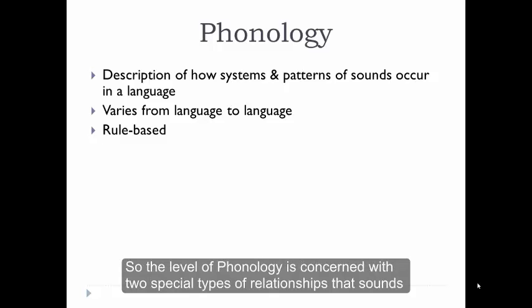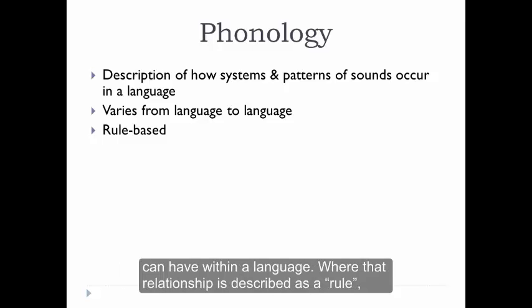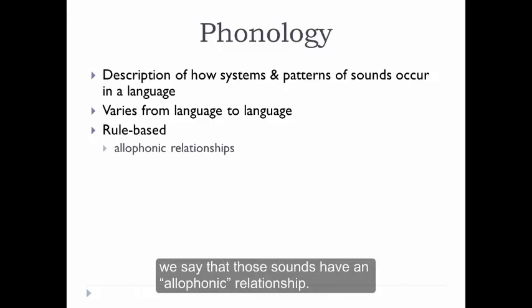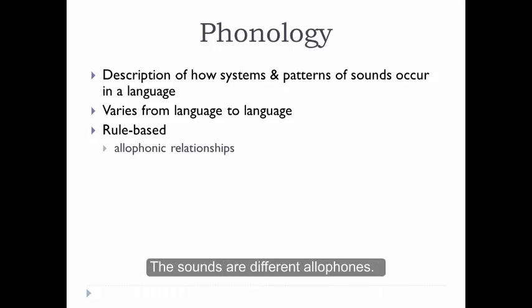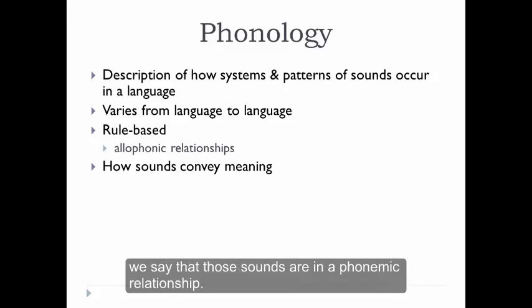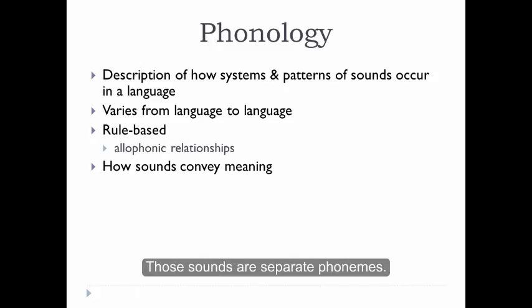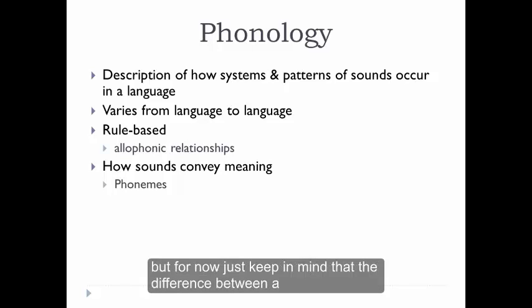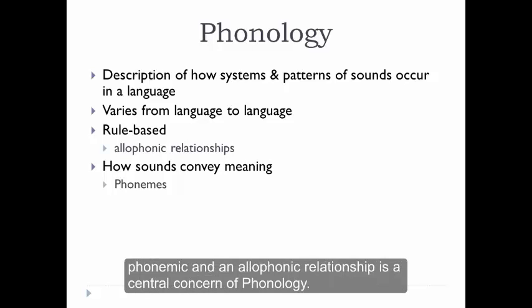So the level of phonology is concerned with two special types of relationships that sounds can have within a language. Where that relationship is described as a rule, we say that those sounds have an allophonic relationship — the sounds are different allophones. And where sounds are used to convey changes in meaning, we say that those sounds are in a phonemic relationship — those sounds are separate phonemes. We'll cover some examples in later videos, but for now just keep in mind that the difference between a phonemic and an allophonic relationship is a central concern of phonology.